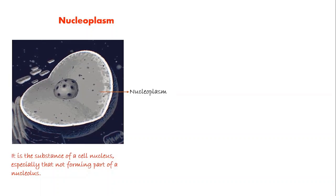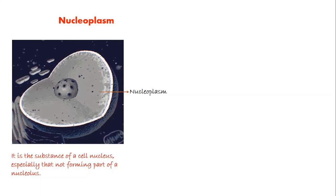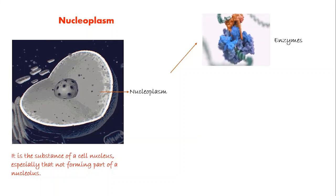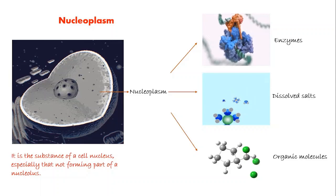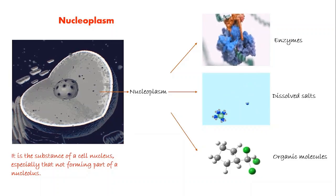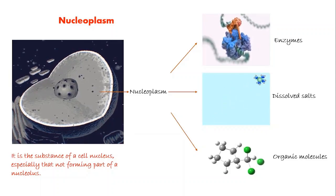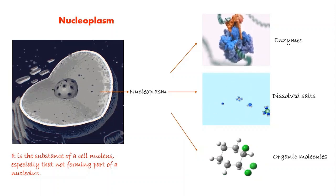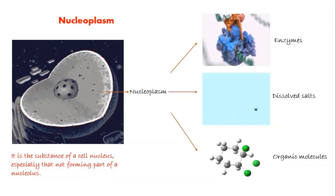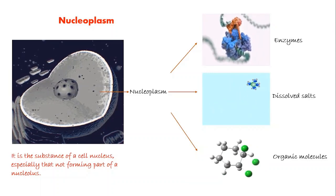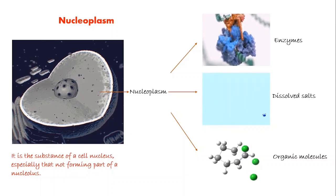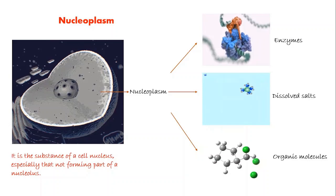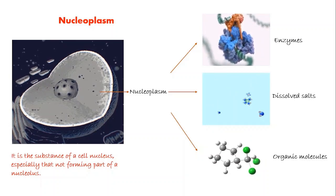Nucleoplasm is a type of protoplasm composed of small lipid content, enzymes, dissolved salts, and several organic molecules such as phosphorus, potassium, sodium, calcium, and magnesium. In addition, the nucleoplasm helps cushion and protect the nucleolus and chromosomes, while also helping maintain the general shape of the nucleus.